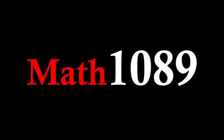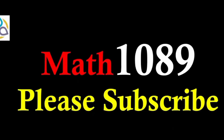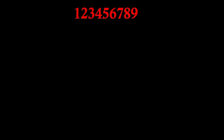Hello everyone, welcome to the YouTube channel Math 1089. Please subscribe to our channel Math 1089. This video is about the number 123456789 — a nine-digit number where the starting digit is 1, next is 2, 3, 4, 5, 6, 7, 8, 9. That means all the natural numbers in their natural order.